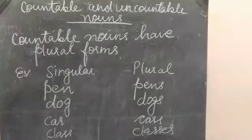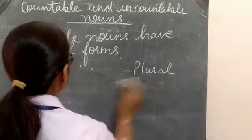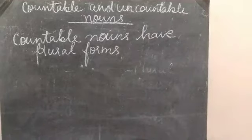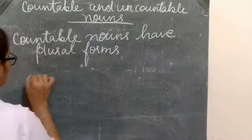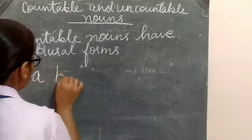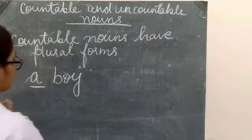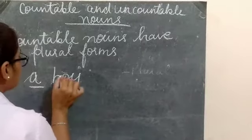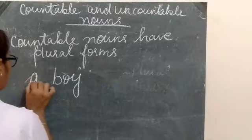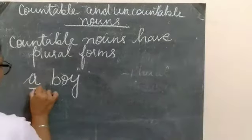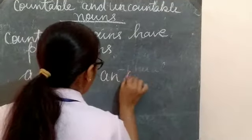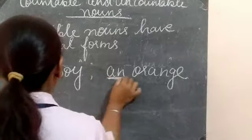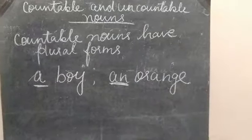One more thing about countable nouns: the article 'a' or 'an' can be used only with countable nouns. Like 'a boy' — this article 'a' means one, numbering one. So we can count 'boy', so this is a countable noun. We use article 'a' or 'an' only with countable nouns, like 'an orange'.